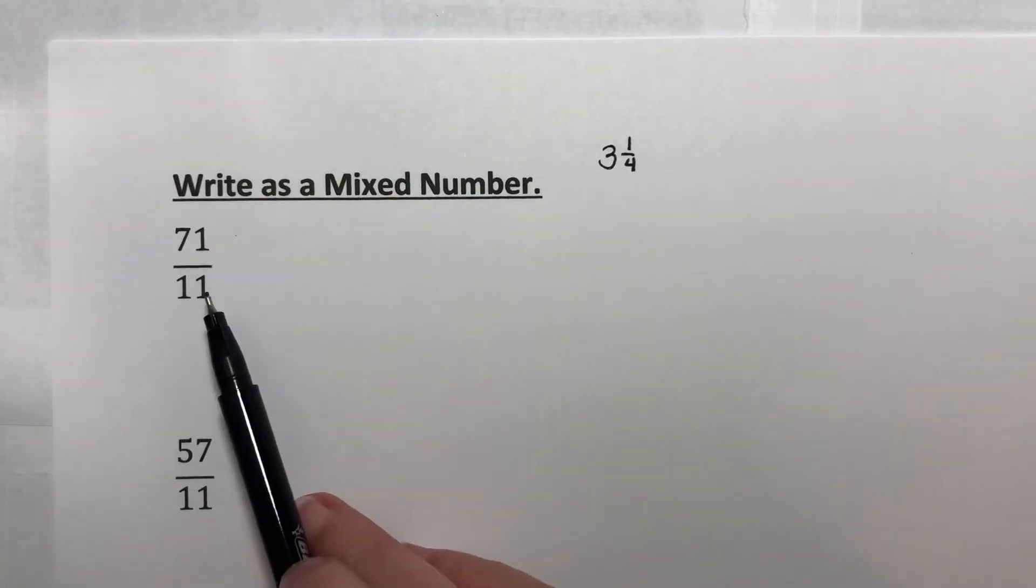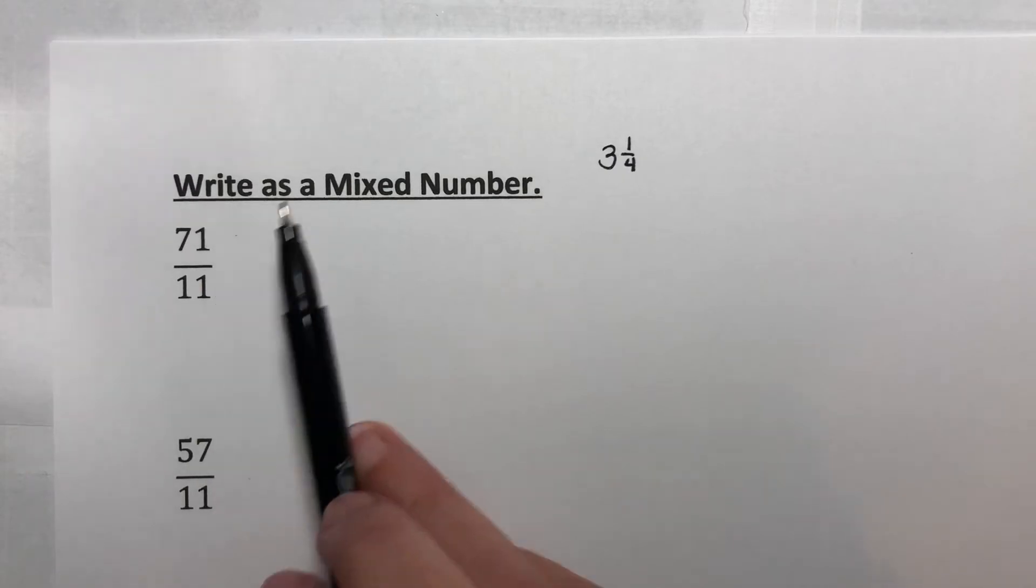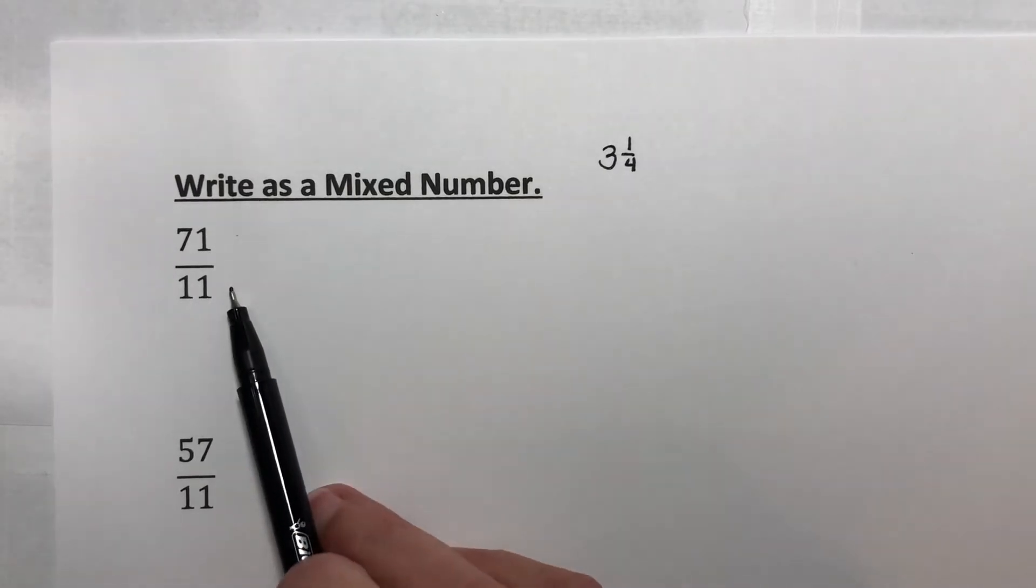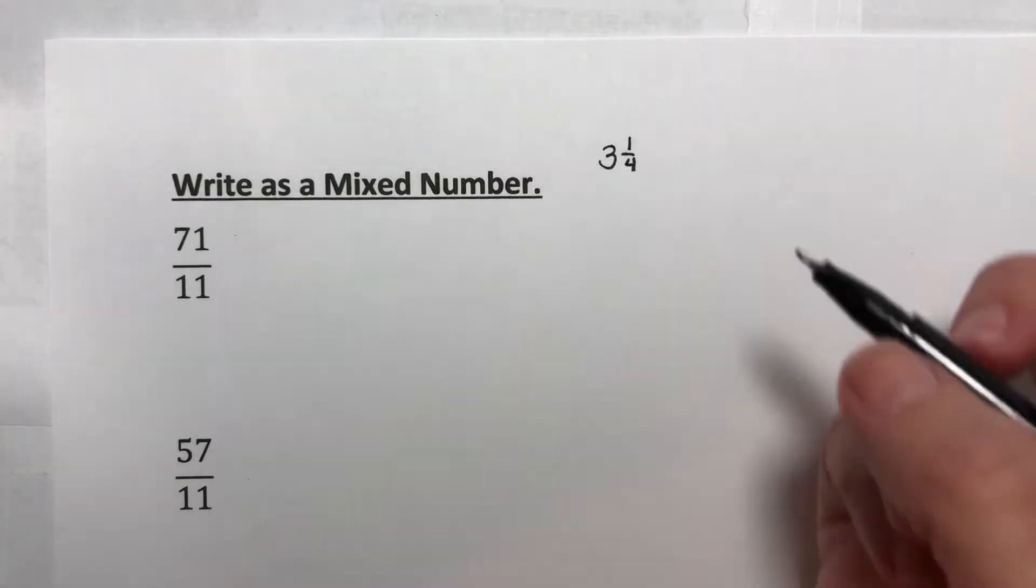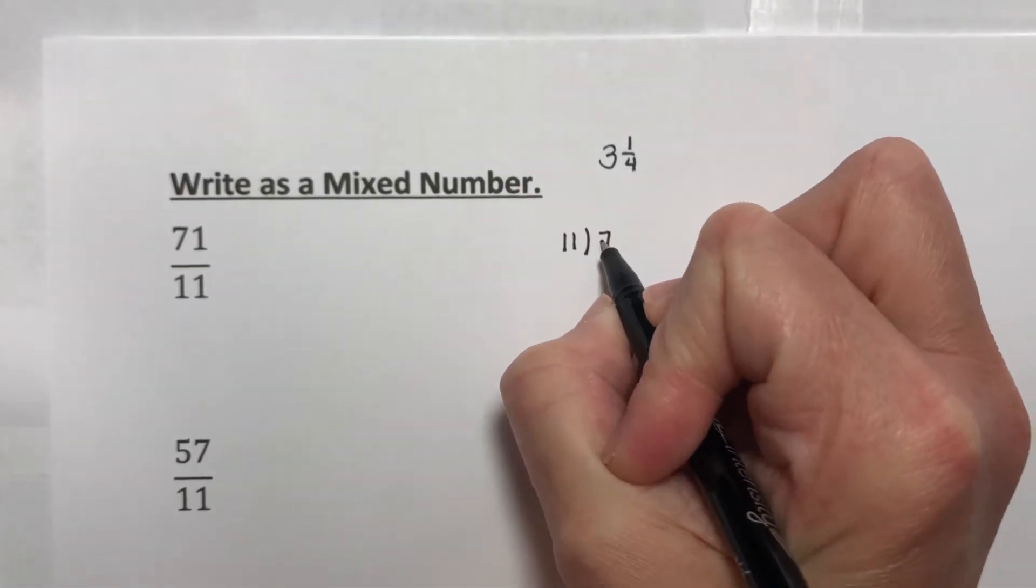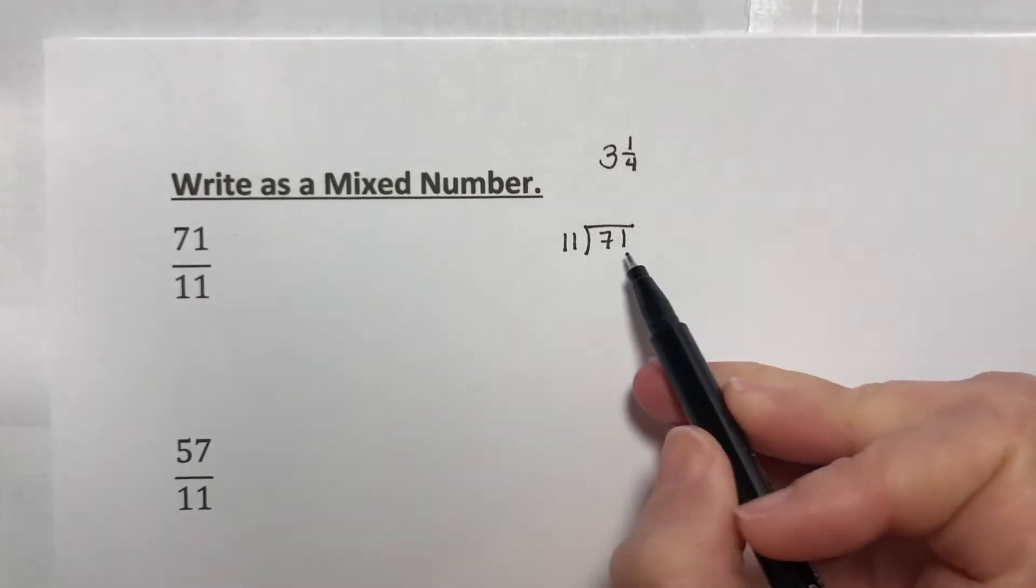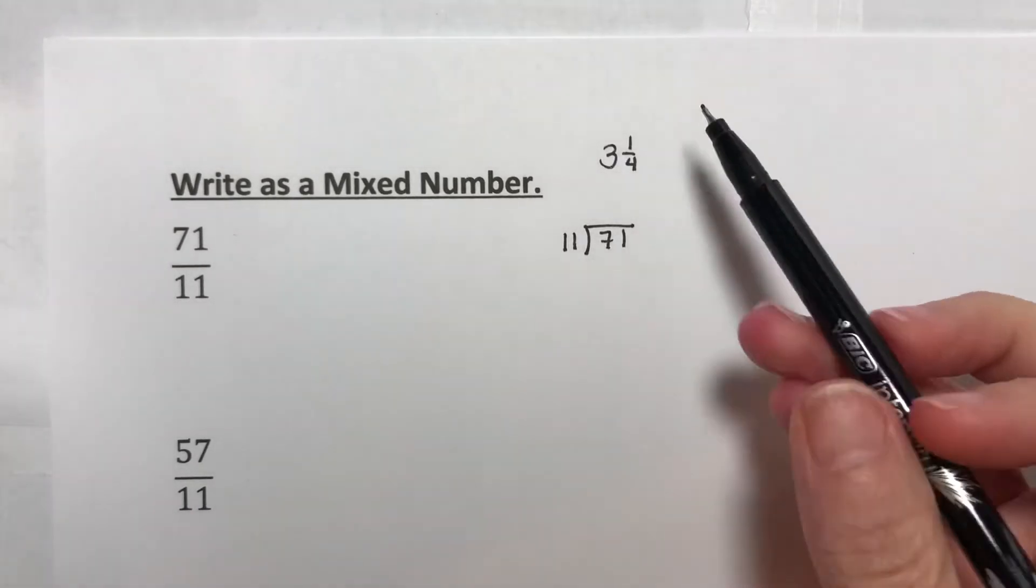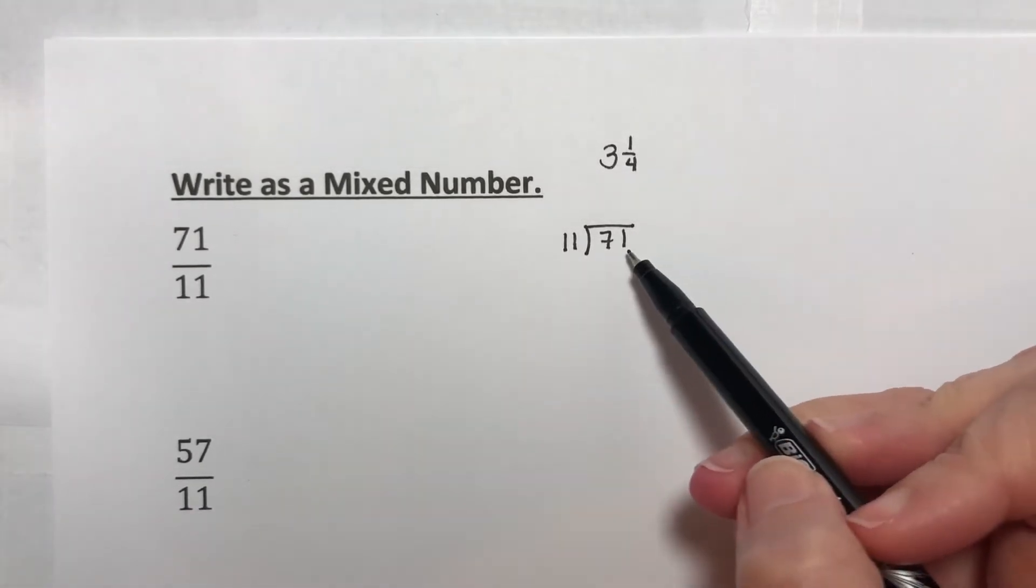This is 71 divided by 11. To convert it to a mixed number, I'm going to do this division by hand so you can see a little bit better what's going on. So 11 divided into 71. How many times does 11 go into 71?